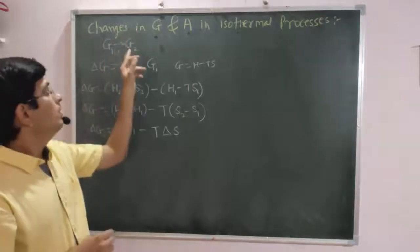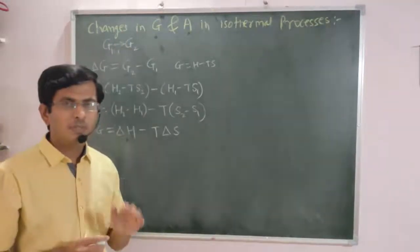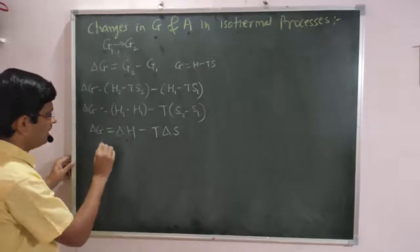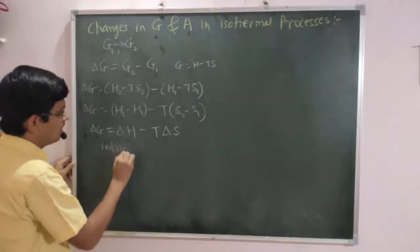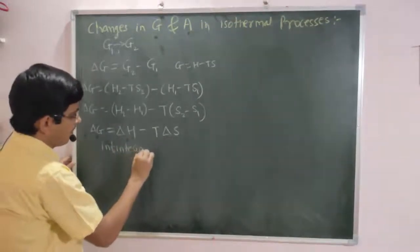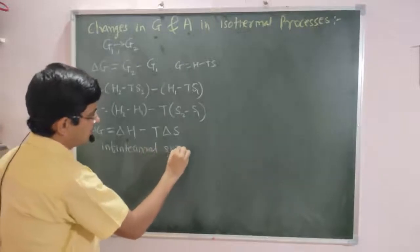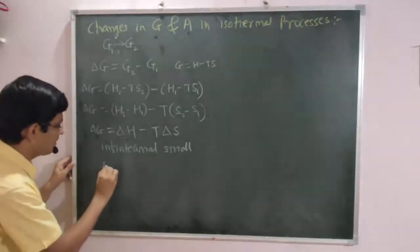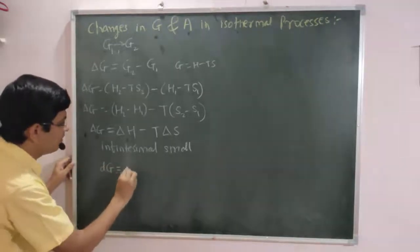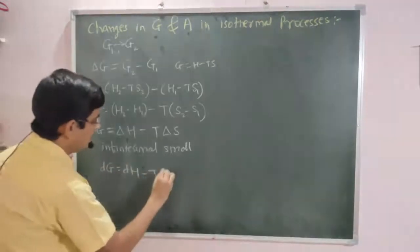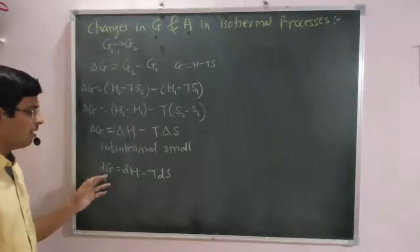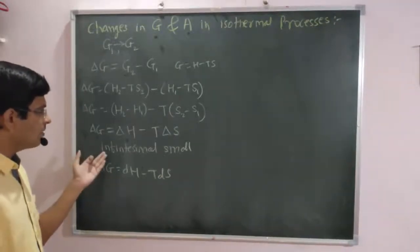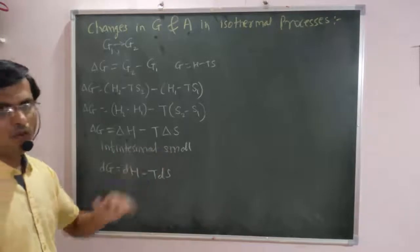For infinitesimal small changes, this equation becomes dG is equal to dH minus TdS. This is for the change in Gibbs free energy in case of an infinitesimal small change.